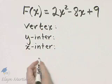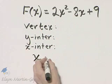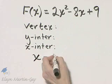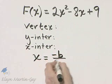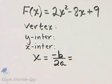To find the vertex, let's use the fact that the x-value of the vertex is negative b over 2a. We'll use that formula.